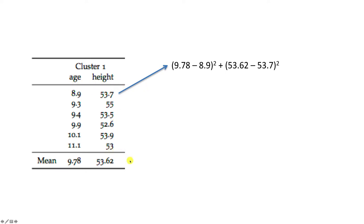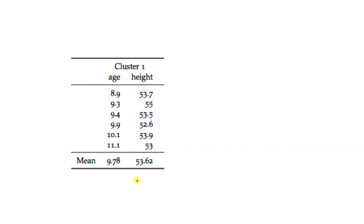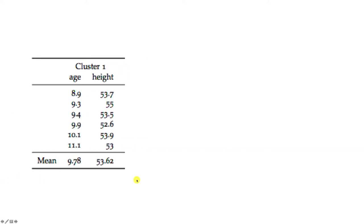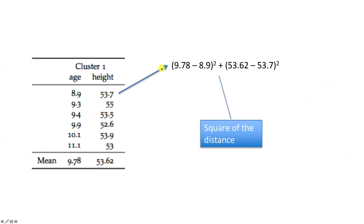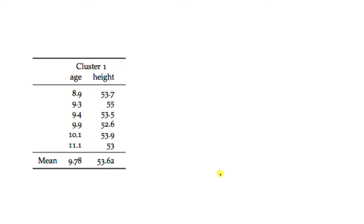We do the same for all the cases and total it up. This is, of course, the square of the distance — the square root of this is the distance. So this is the square of the distance, and therefore, because distance is involved, we need to think about standardization.